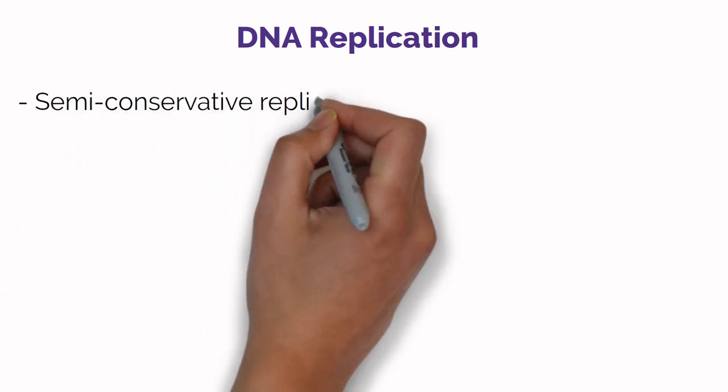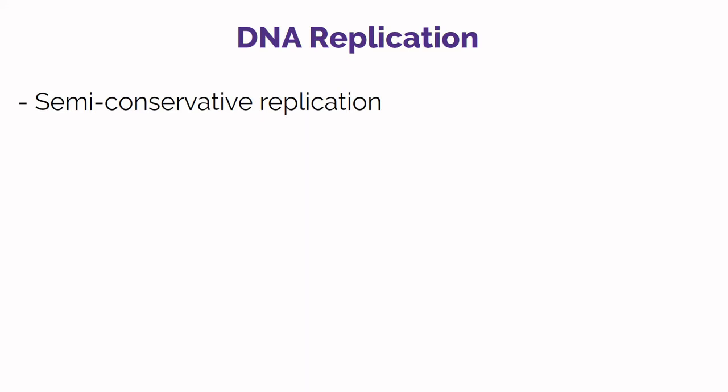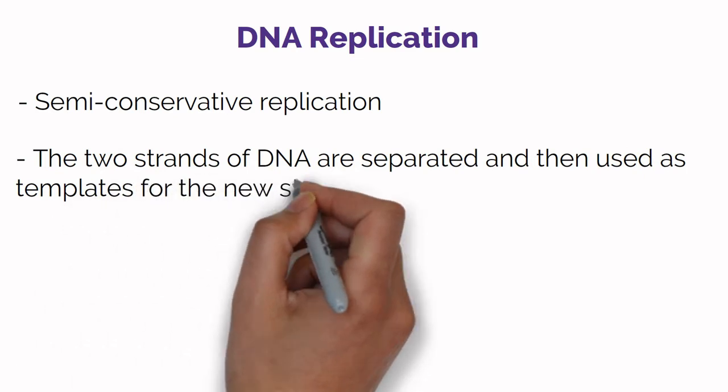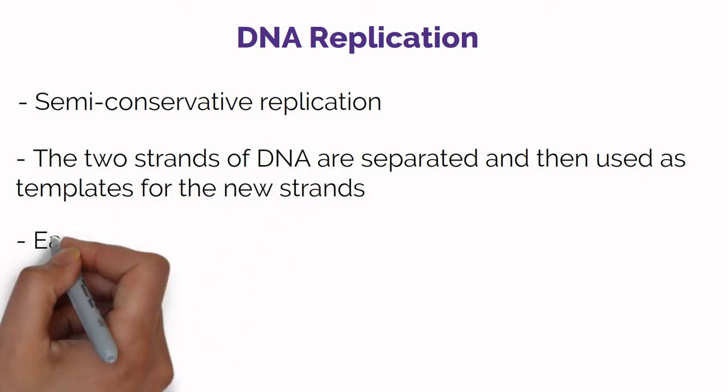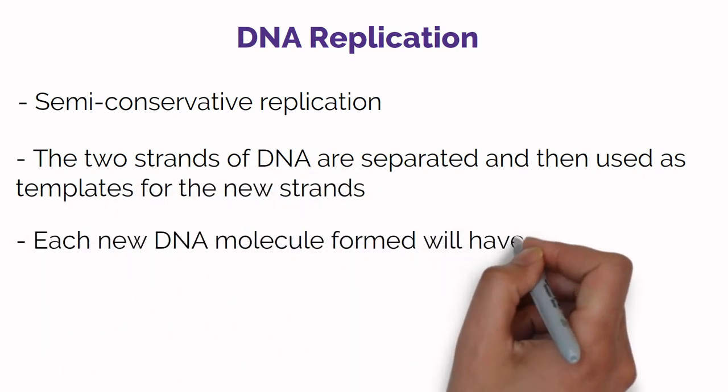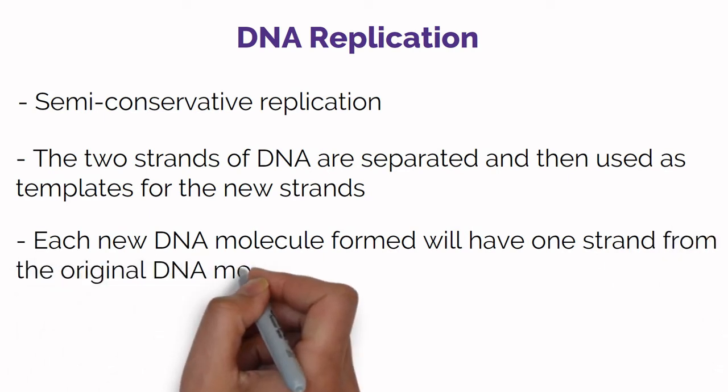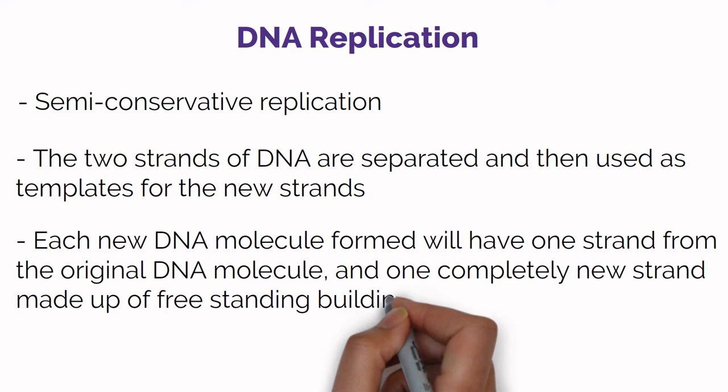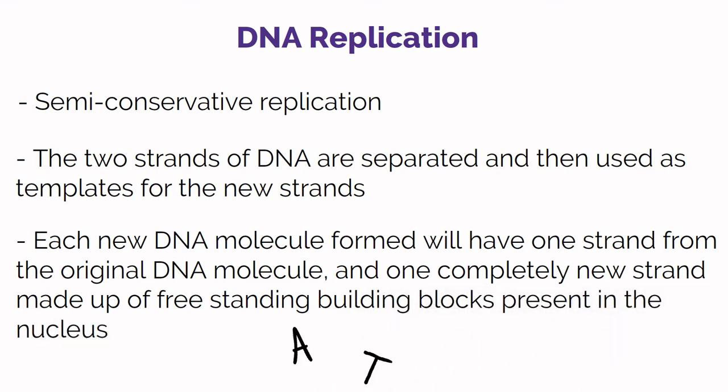This replication process is semi-conservative, and this is because when this replication occurs, the two strands of DNA are separated and then used as templates for the new strands. So each new DNA molecule formed will have one strand from the original DNA molecule and one completely new strand made up of free-standing building blocks present in the nucleus.